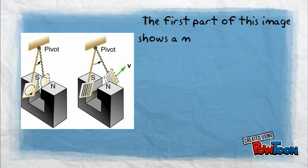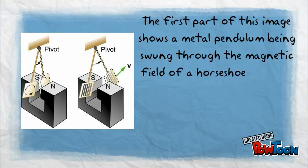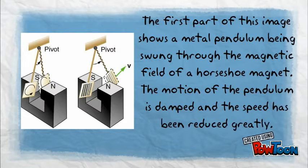The first part of this image shows a metal pendulum being swung through the magnetic field of a horseshoe magnet. The motion of the pendulum is damped and the speed has been reduced greatly.